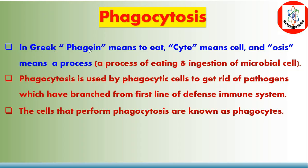Phagocytosis. In Greek, 'phago' means to eat, 'cytes' means cell, and altogether it means a process of eating and ingestion of microbial cells. Phagocytosis is used by phagocytic cells to get rid of pathogens which have breached the first line of defense of the immune system. The cells that perform phagocytosis are known as phagocytes.